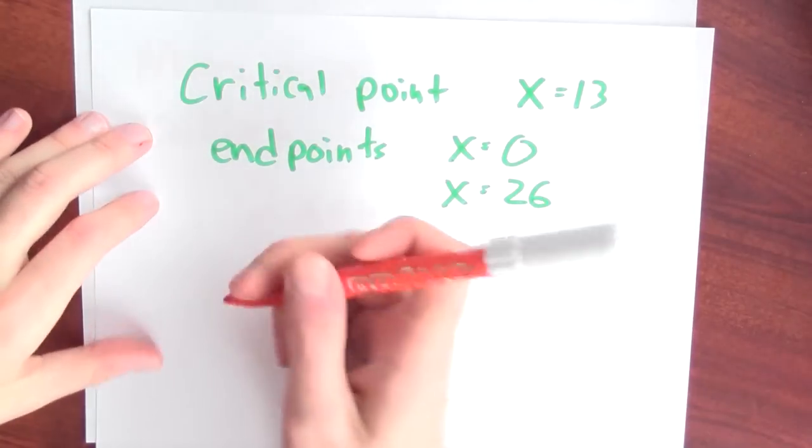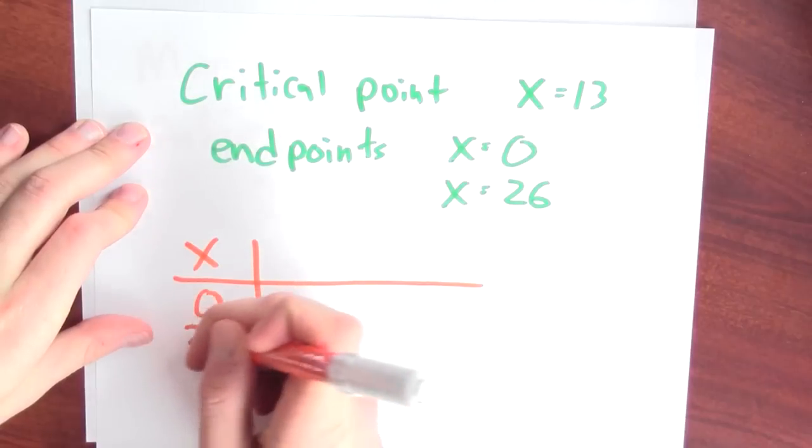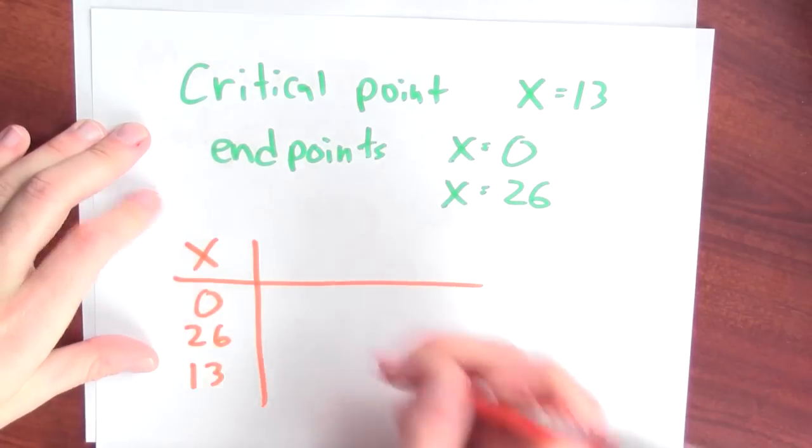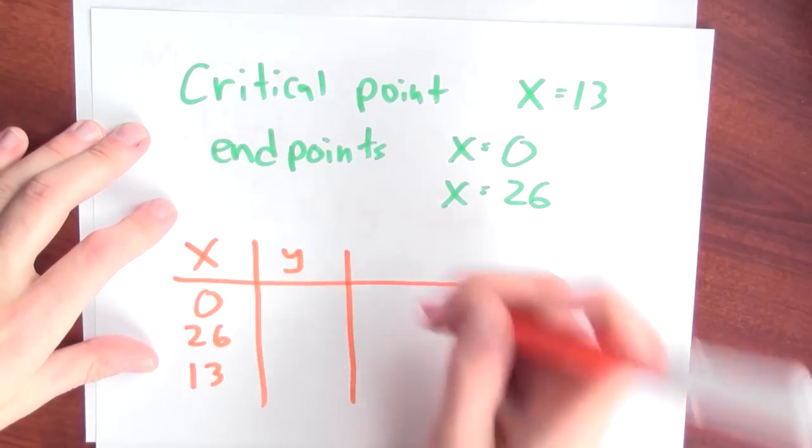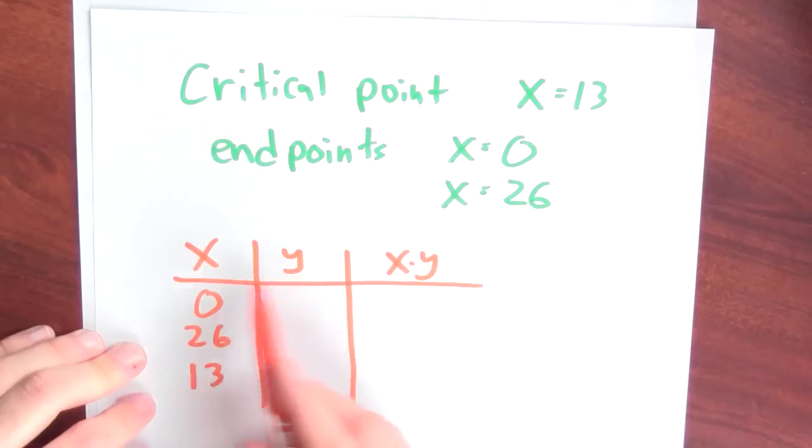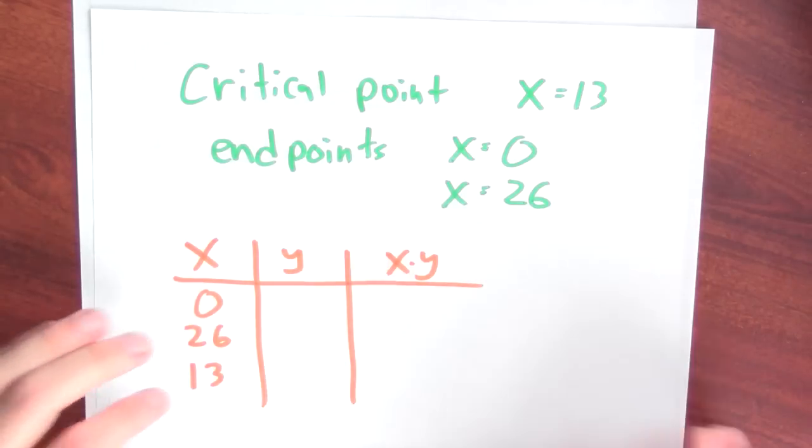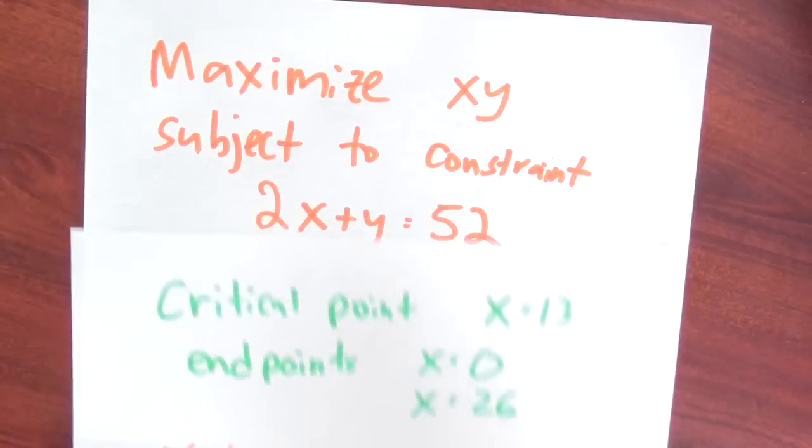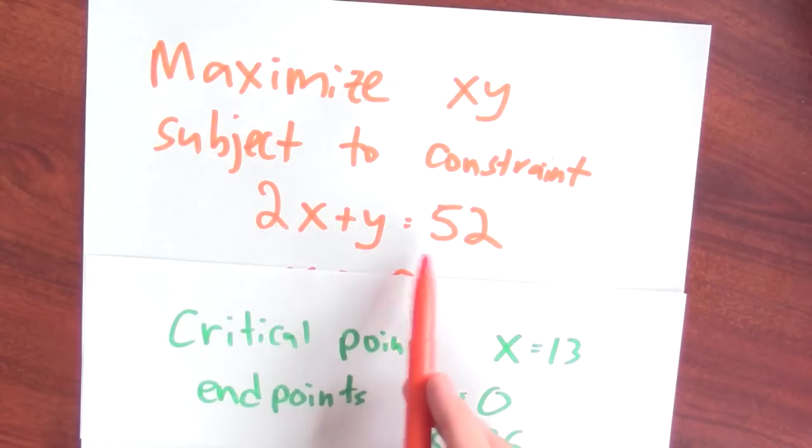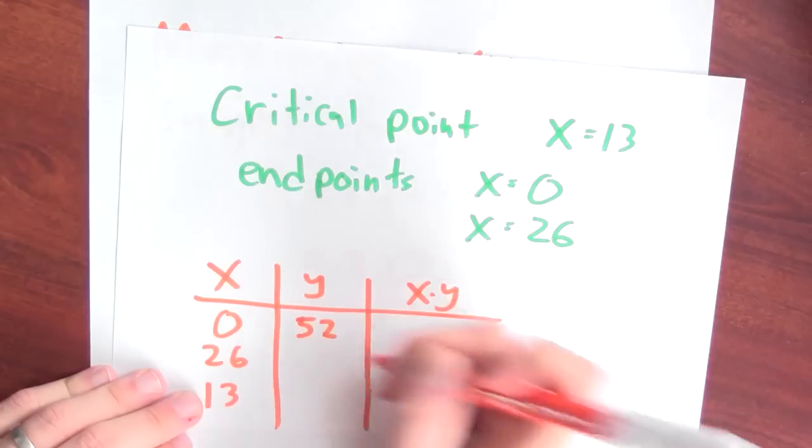Now I just have to figure out which of these values results in the best fence. So these are the three points that I should check. So I'll make a little table here. The x values that I'll check are 0, 26, and 13. And I'll figure out what the corresponding y value is. And then I'll figure out x times y, which would be the area of the fenced in region if I use these as my side lengths for my sheep pen. So let's see, if x is equal to 0 and I satisfy this constraint that 2x plus y is 52, if x is equal to 0, then y must be 52.